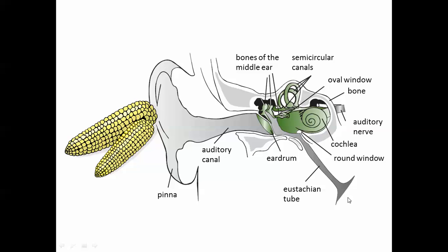The eustachian tube is probably most well-known for your ability to balance the pressure inside your ear with the pressure that's outside. You all have experience when you get on an airplane and you fly up.